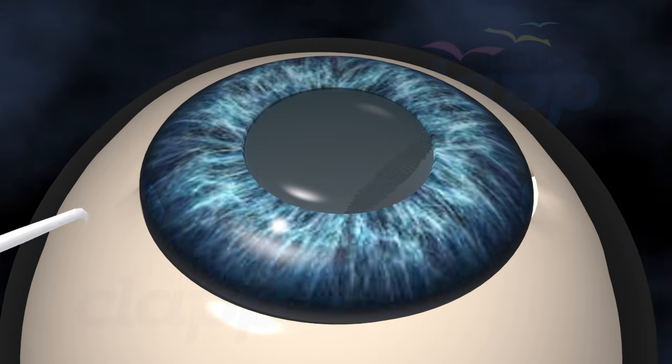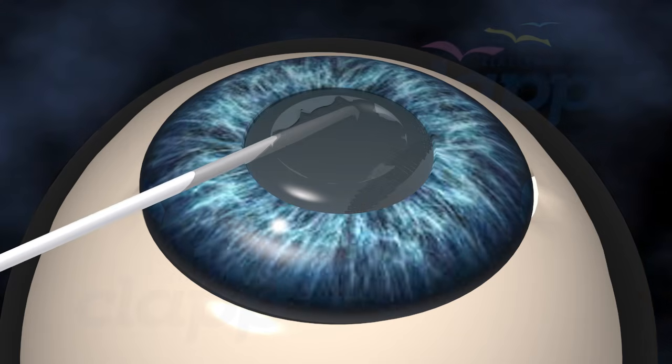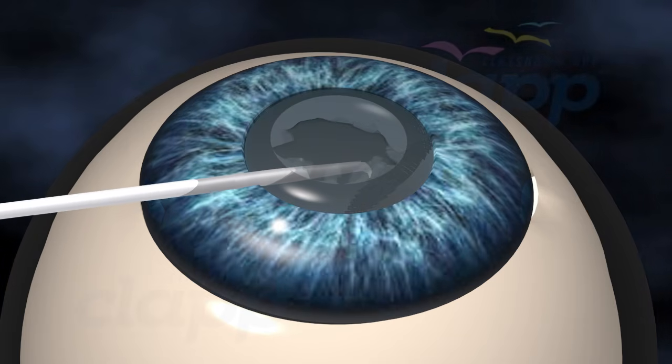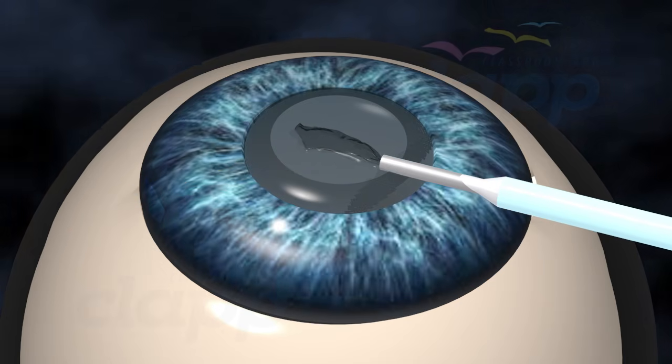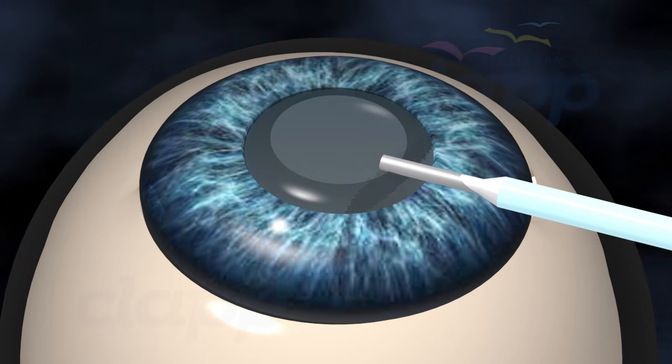Then a round opening, around 5 mm, will be made in the capsular bag where the lens is located. This will help to remove the cataract lens without removing the capsular bag.